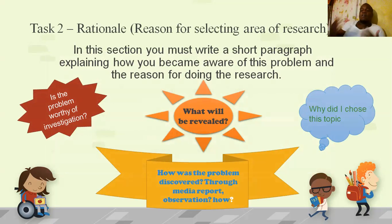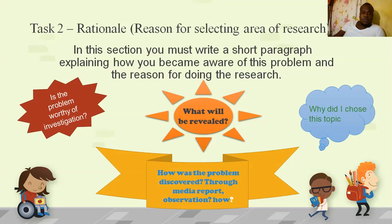Now we need a rationale, or reason for selecting the area of research. This is what caused you to carry out this research — where you got the motivation to investigate this social issue. In this section you must write a short paragraph explaining how you became aware of the problem and the reason for doing the research. Think about: is the problem worthy of investigation? What will be revealed? How was the problem discovered — through media, a report, or observation? This is one of the easier parts of the SBA.